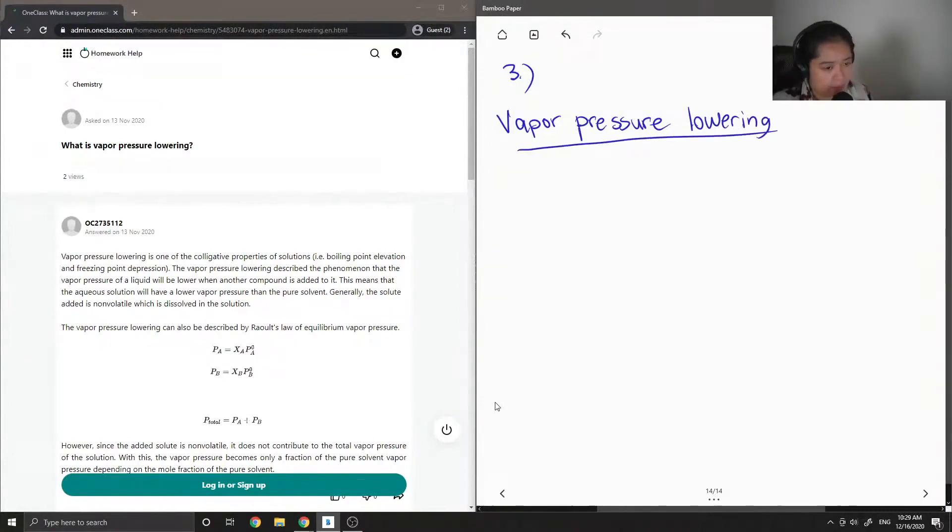Vapor pressure lowering is a term that's used to describe the addition of a non-volatile solute. By non-volatile they mean a substance that is hard for it to turn into a gas. So a non-volatile solute results in lowering the vapor pressure of the solvent.